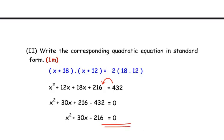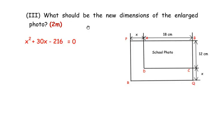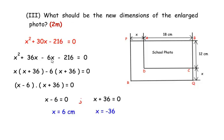Now the third question is for two marks: what should be the new dimensions of the enlarged photo? We need to find x from x² + 30x − 216 = 0. Factorizing: the factors are 36 and −6, since 36 + (−6) = 30 and 36 × (−6) = −216. So we split: x² + 36x − 6x − 216 = 0. You can use prime factorization to verify the factors of 216.